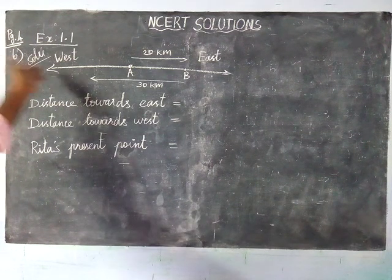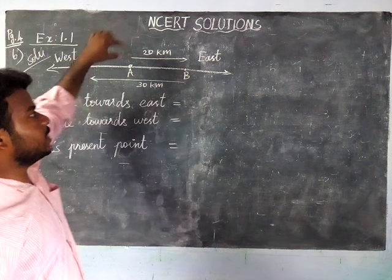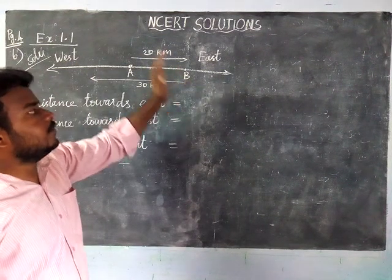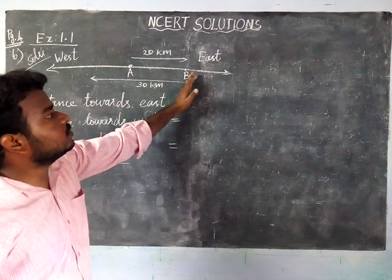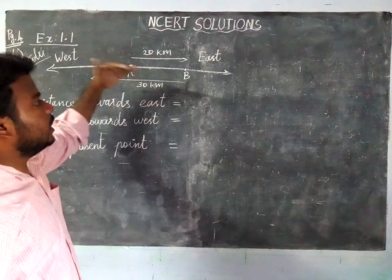Ritu walks east side 20 km from point A and reaches point B. From point B he moves towards west side, walking 30 km.